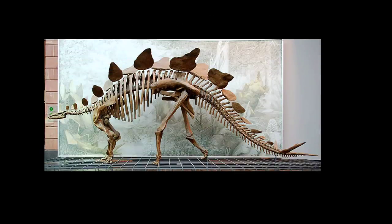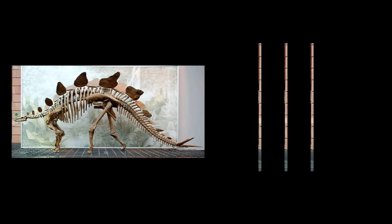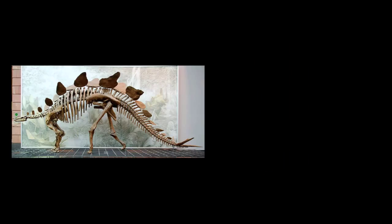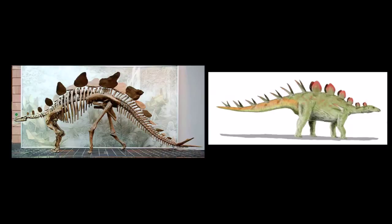So what is evidence? With so much information available, sometimes it's hard to distinguish fact from interpretation. Take the stegosaur skeleton, for example. This is the real evidence. Next we can make a drawing of what the stegosaur actually looked like when it was alive. This is called an artist impression.